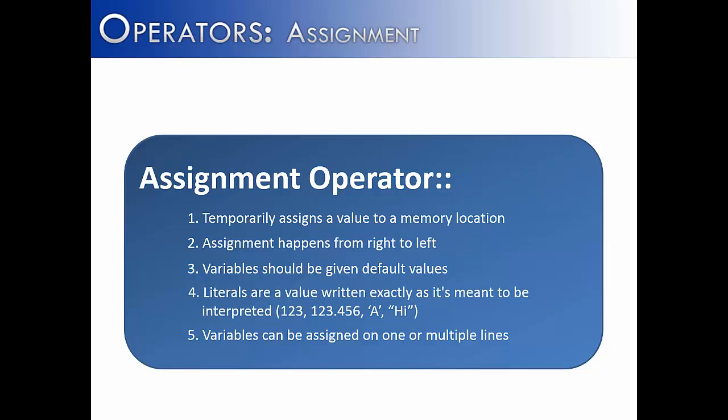And lastly, variables can be assigned on one or multiple lines. You can just say, I have an integer data type, and its name is going to be x. And then on the next line, you can give x a value, or you can do something like int x equals 5 all on the same line. The assignment operator does not check for equality, and its purpose is to assign a value into memory.